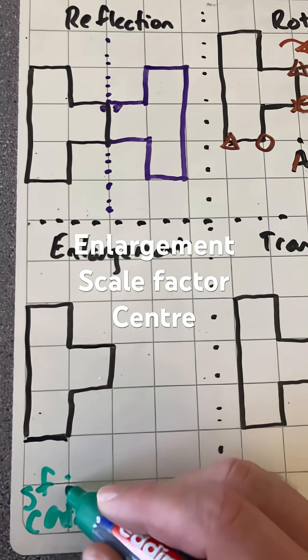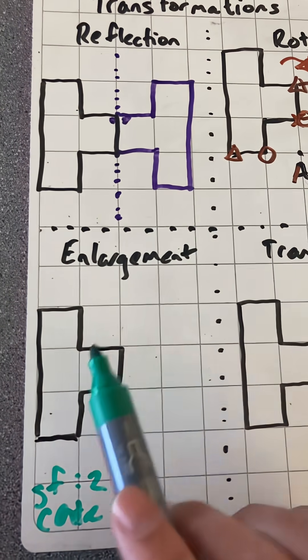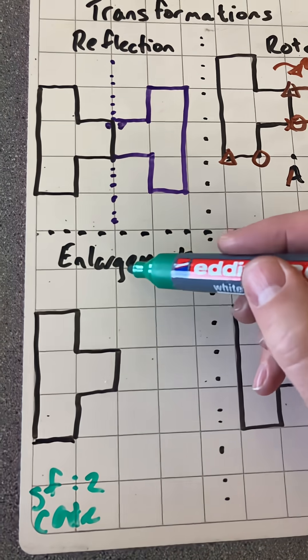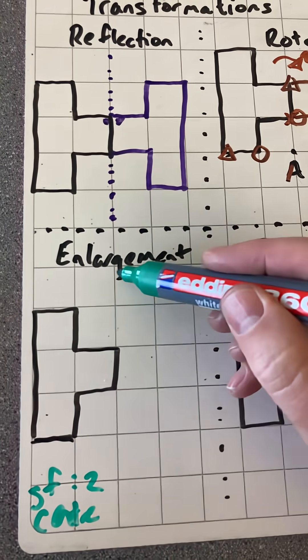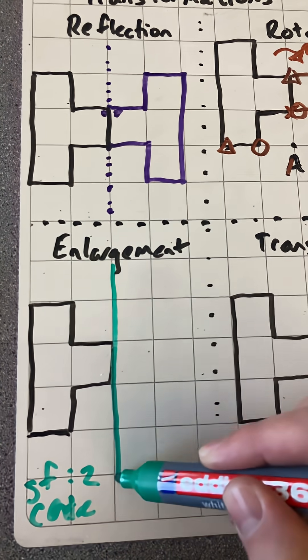I've set a scale factor of two, so I'm making the shape twice as big. Because of the drawing here, I'm not going to have space to do the center of enlargement. But if that is three, the shape will now be six.